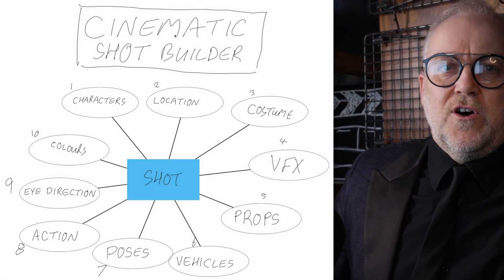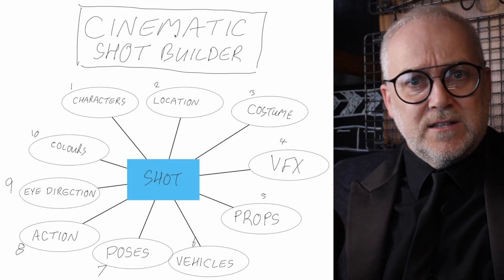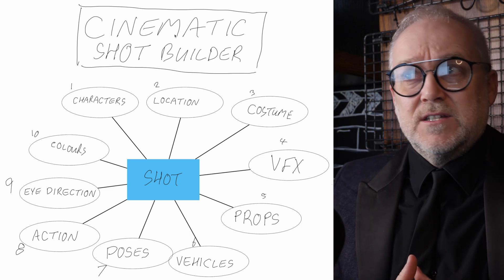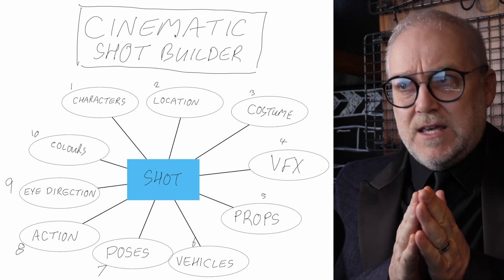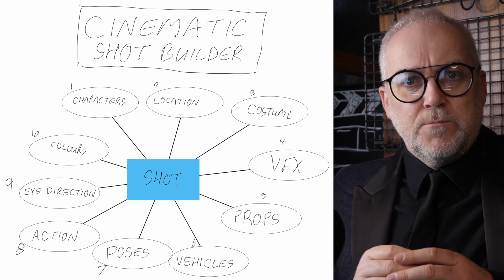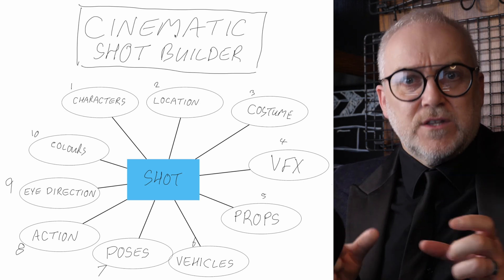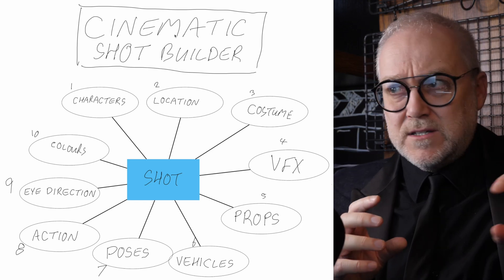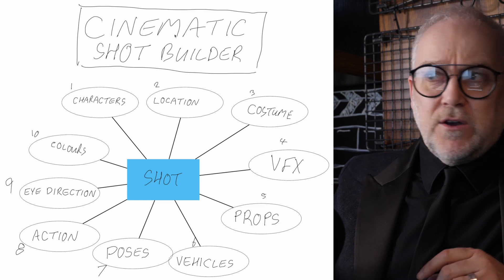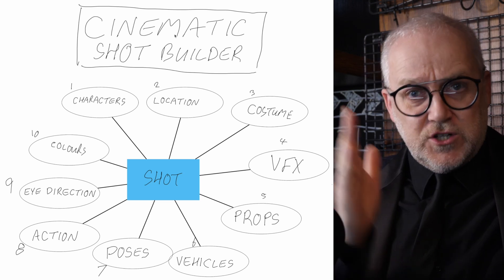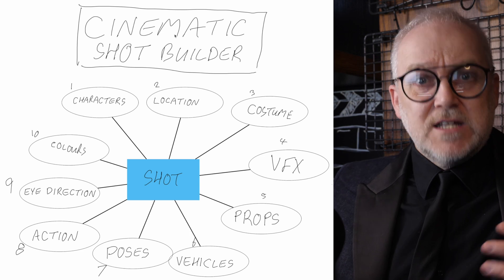I was thinking recently about what goes into a typical shot, and I just listed the first 10 things that came to mind. Character consistency, or continuity, is a really important one. Location is another issue where continuity is really important — the location needs to look the same shot to shot to shot. Then you've got costume, that has to be consistent. Visual effects need to be consistent. Props need to be consistent, shot to shot to shot.